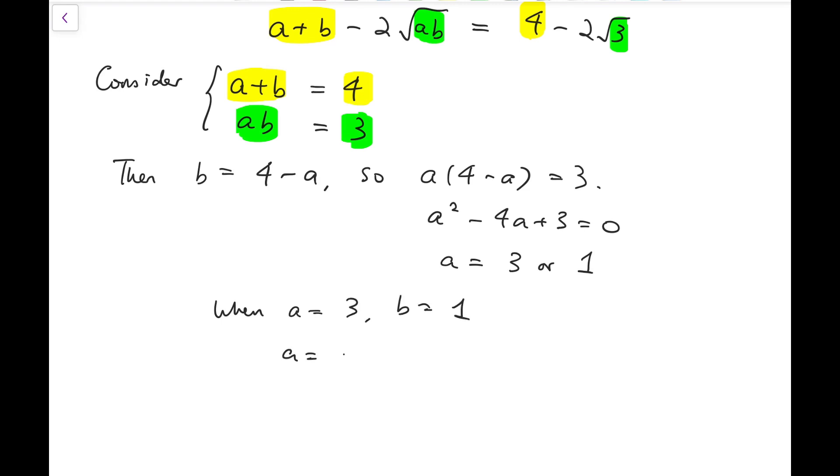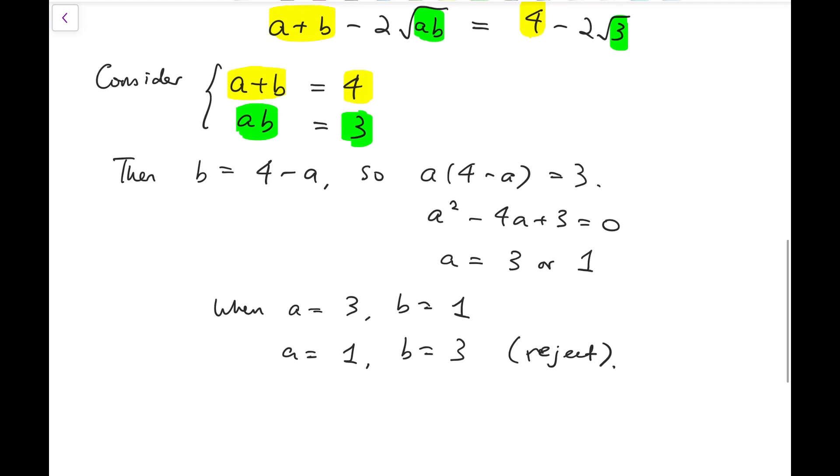Now when a is 3, we know that b is 1. And when a is 1, b is 3. But we have to reject this case because we know that a should be larger than b under our setup. So this has to be a solution.